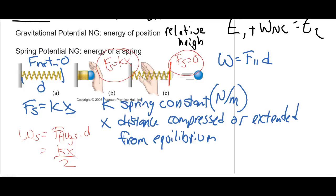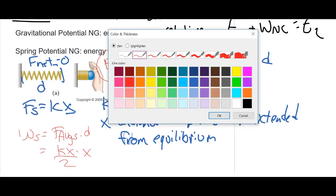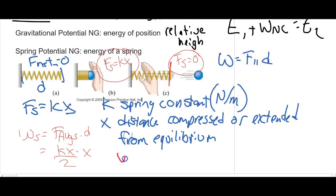Then multiply by the distance. Well, the distance that the spring acted over is the exact same amount that it was compressed, so that is x. So if I looked at this equation, I would end up with work done by the spring equals one-half kx squared.